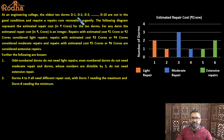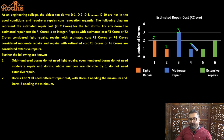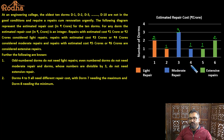At an engineering college, the oldest 10 DOMs — D1 through D10 — are not in good condition and require repair and renovation urgently. The following diagram represents the estimated repairing cost for the 10 DOMs. One crore repairing cost is required on 2 DOMs, 2 crore on 1 DOM, 3 crore on 3 DOMs, 4 crore on 1 DOM, 5 crore on 1 DOM, and 6 crore on 2 DOMs. The height of the bar represents the number of DOMs.